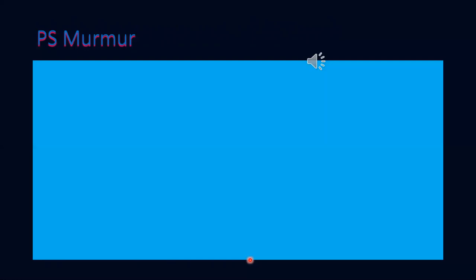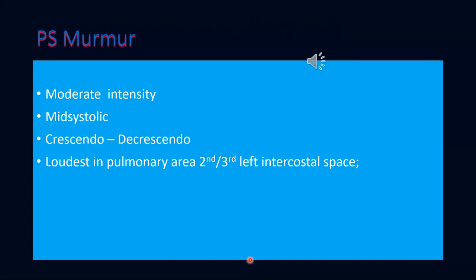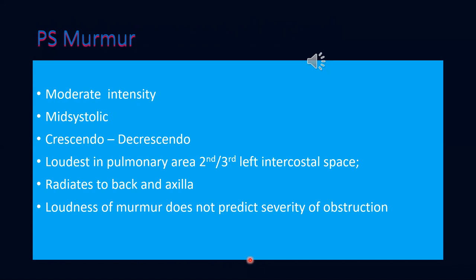The characteristic murmur of pulmonary stenosis in tetralogy is a moderate-intensity, mid-systolic, crescendo-decrescendo murmur, loudest in the pulmonary area, radiating to the back and axilla. The loudness of the murmur does not predict severity of obstruction — in fact it is inversely proportional to severity. This is a right-sided murmur that increases with inspiration.